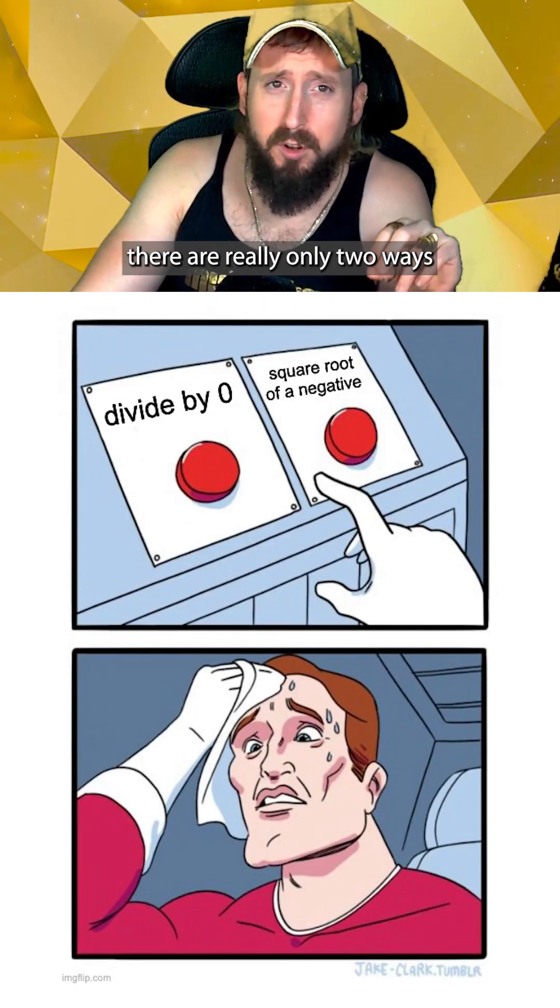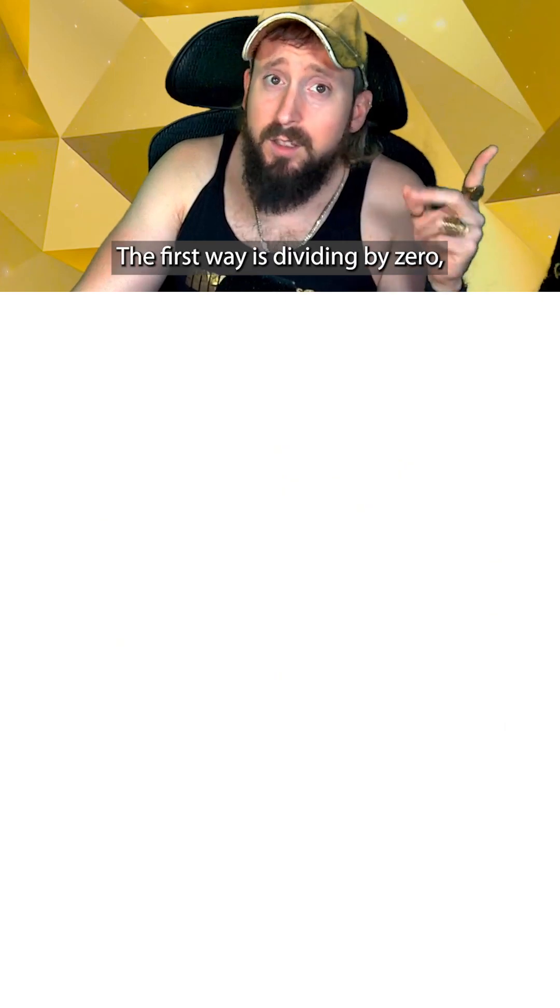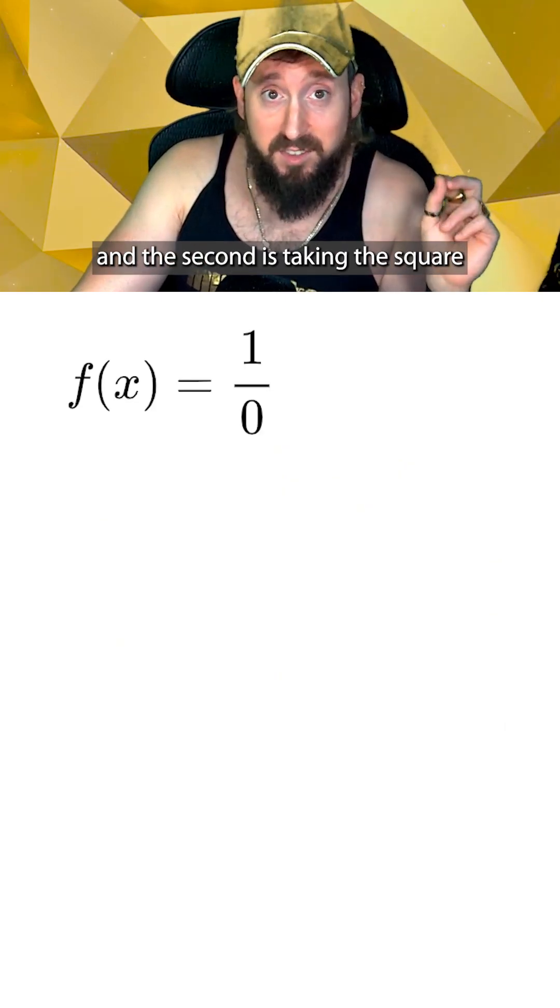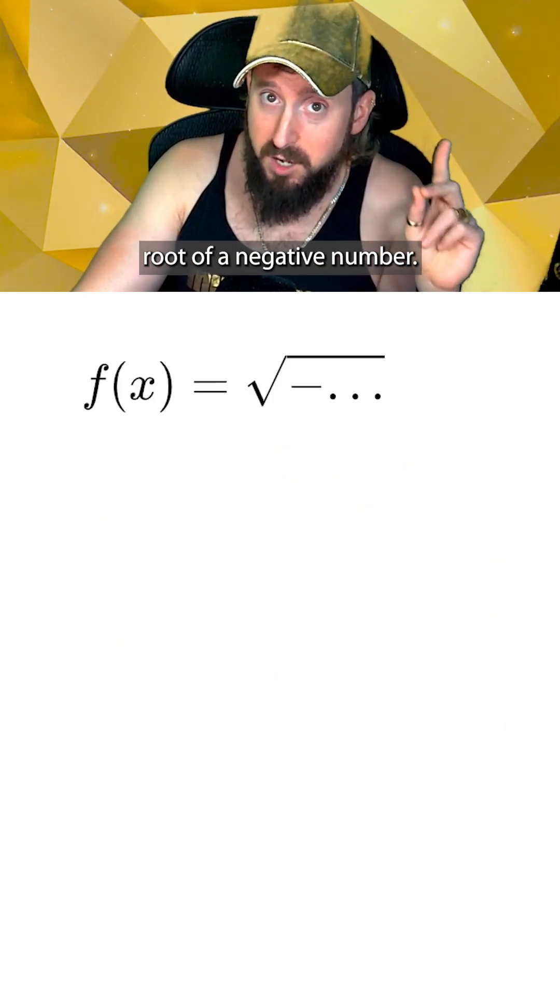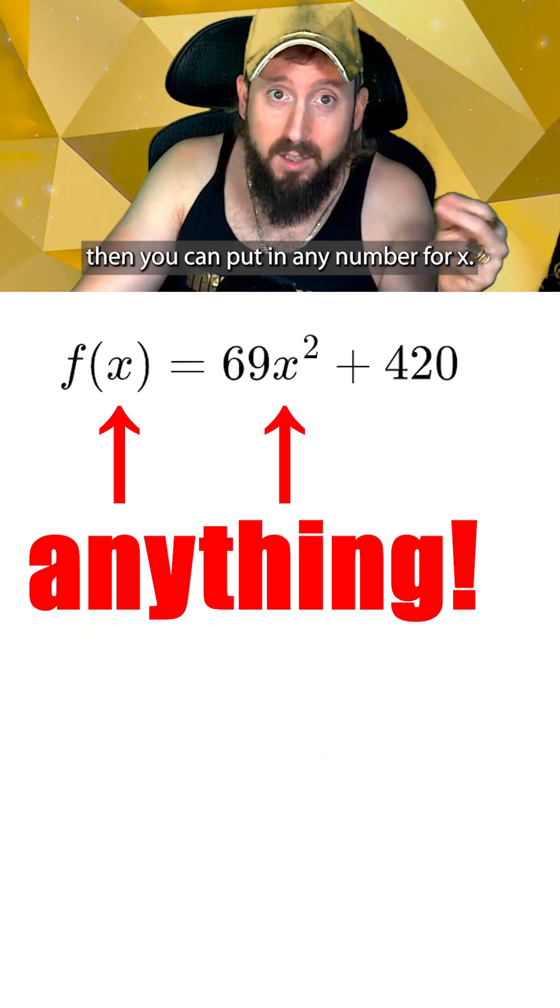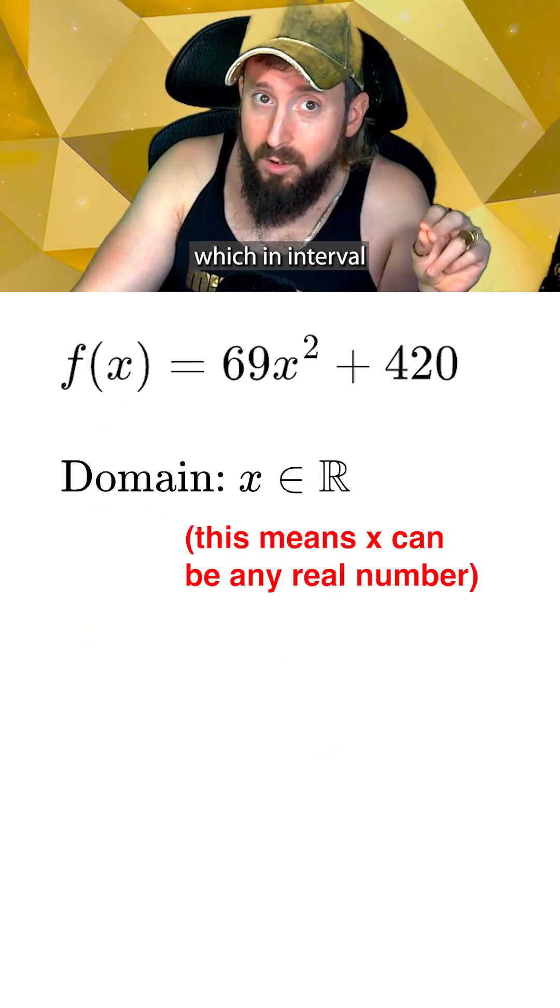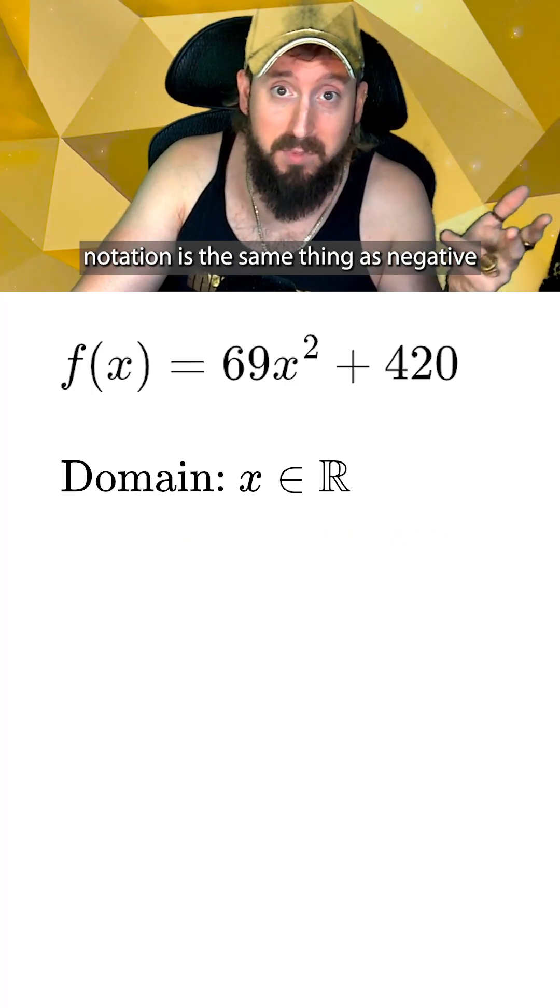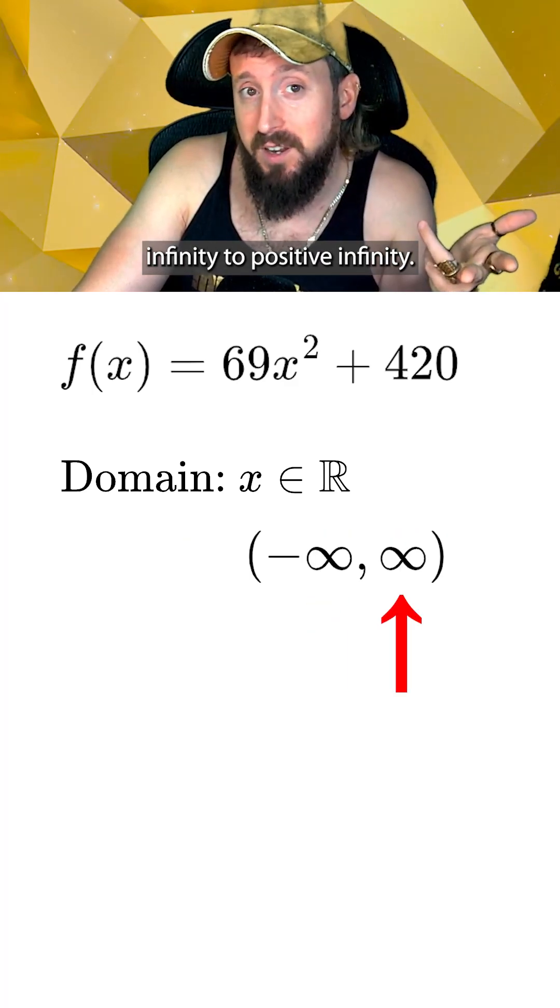For most high school math questions, there are really only two ways you can break a function. The first way is dividing by zero, and the second is taking the square root of a negative number. If neither of these things are happening in your function, then you can put in any number for x, so the domain will be all real numbers, which in interval notation is negative infinity to positive infinity.